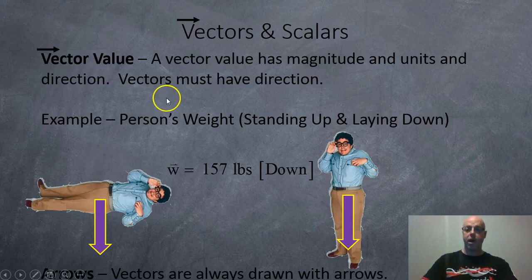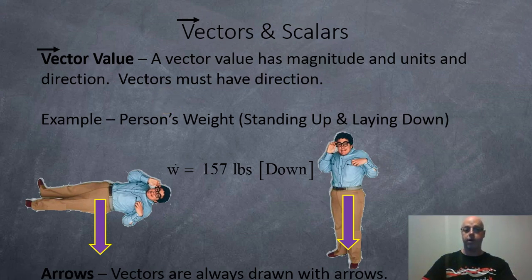Vector value, a vector value has magnitude and units and direction. Vectors must have a direction. This is the difference between a vector and a scalar.